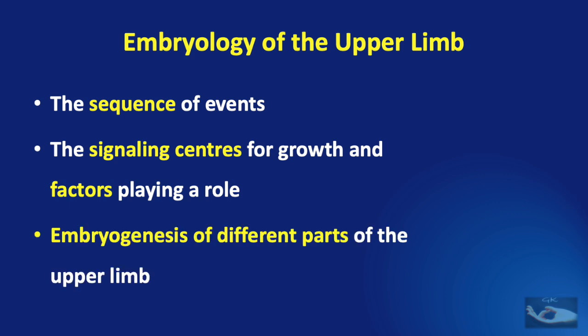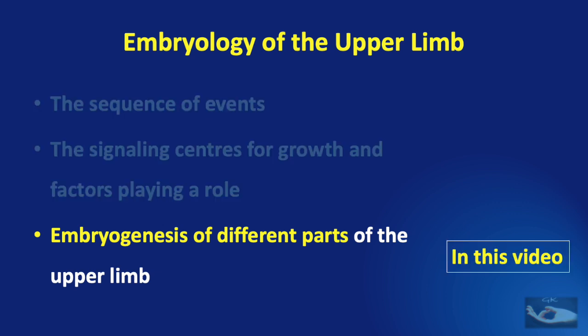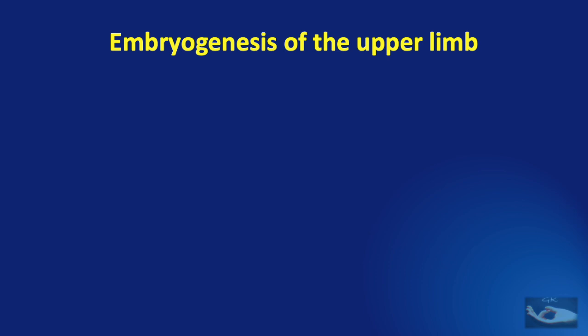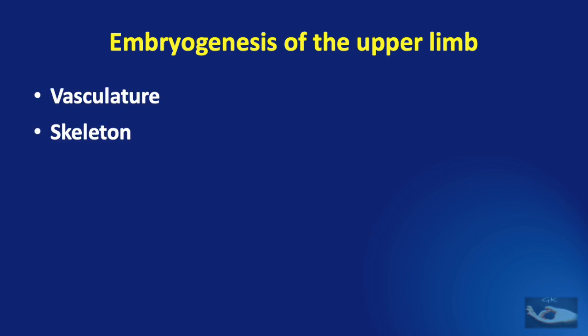What remains to be seen is the embryogenesis of different parts of the upper limb, which we are going to deal with in this video. When we talk about embryogenesis of the upper limb, we mean the development of the different structures like the vasculature, the skeleton, the joints, the muscles, the nerves, and the hand as a whole.